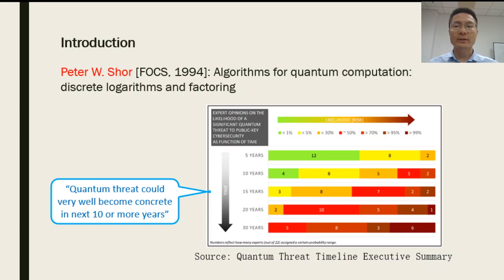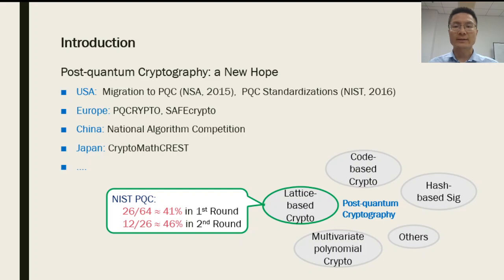As commented in a report on quantum threat timeline, quantum threat could well become concrete in the next 10 or more years. The world has started many projects on constructing post-quantum cryptosystems that can resist against quantum attacks. One of the main research directions is lattice-based cryptography. For example, lattice-based schemes are about 41% and 46% of all submissions in the first and second round of NIST's PQC competition, respectively.